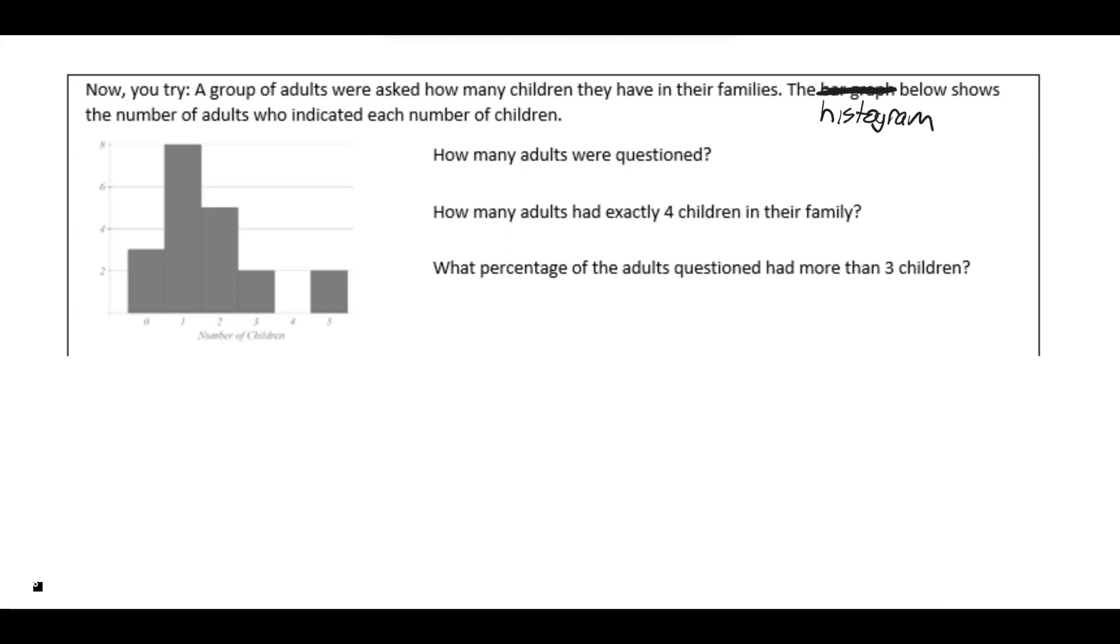So we have a group of adults who are asked how many children they have in their families. This histogram below shows the number of adults who indicated each number of children. So for example, this first bar, the height is three. Three adults said they had zero children in their families. This next bar, the height is eight. Eight adults said that they had one child in their families. So the numbers across the bottom are the number of children, and the height of the bar represents how many people answered that question in that way.